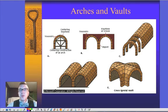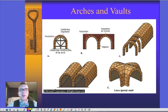If I have two barrel vaults that come together, I get a cross, or what is referred to as a groin vault. So that's a little bit of background on arches.